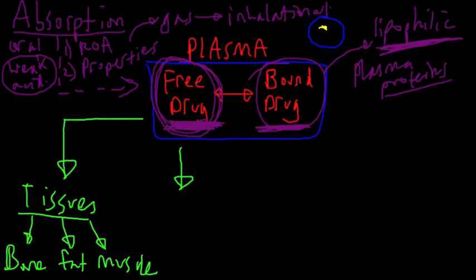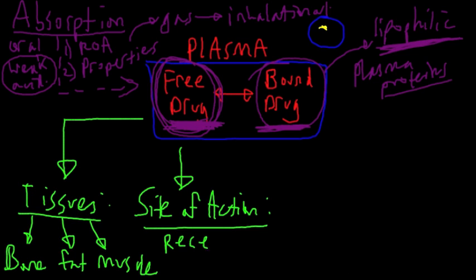The other site is actually the site of action. Once we're on this proverbial highway, which is the bloodstream or the circulatory system, we go to either the tissues, and some of those tissues might actually be the site of action. What's important is the site of action typically has receptors that bind to the drug and exert some sort of pharmacological action.